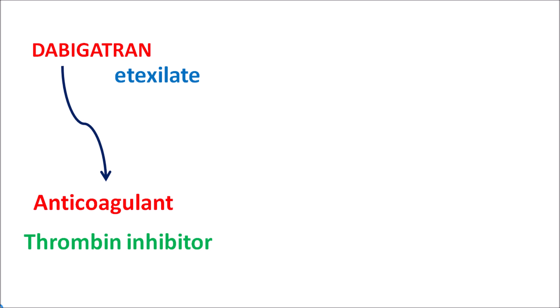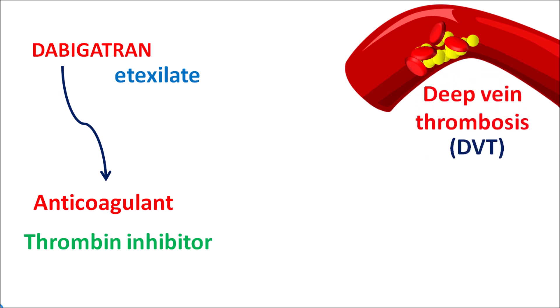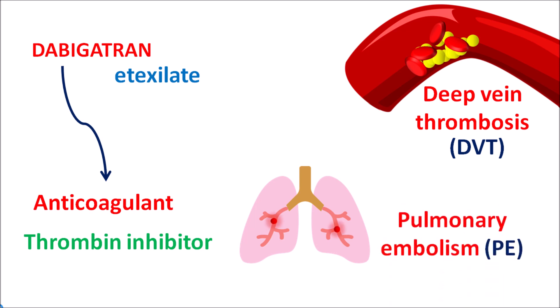Since this drug acts as an anticoagulant, dabigatran can be used to control thrombotic events. It is particularly used in conditions like deep vein thrombosis associated with surgical procedures such as hip and knee surgery, and in embolic conditions like pulmonary embolism. It is used for the treatment of both deep vein thrombosis as well as pulmonary embolism.